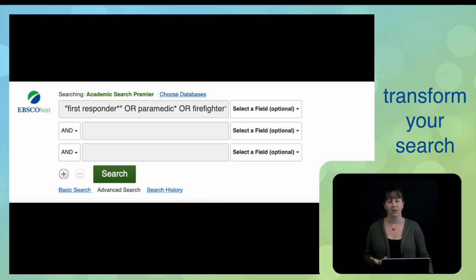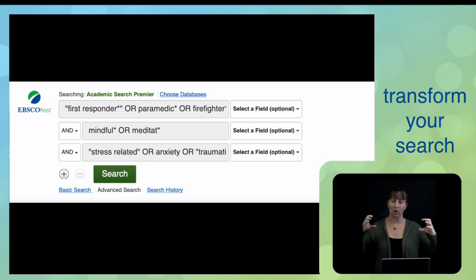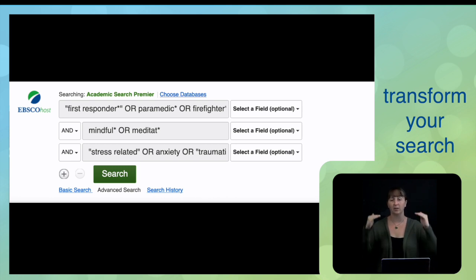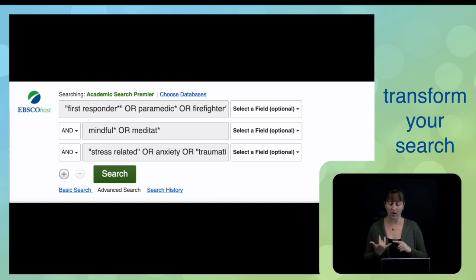In the next slide, you can see I did the same thing with my other two components — mindfulness and stress-related — putting them into one block of the search and connecting them with OR. The AND comes into play because every time you move down a box in the search, it defaults to connecting by AND. You can see on the left side of the search boxes there's that AND feature. You can change it if you want to, but mostly don't. So there we have our ANDs and ORs, our phrase searching, and our truncation.